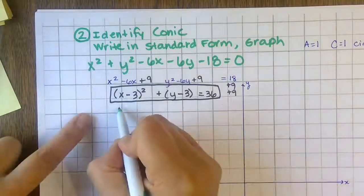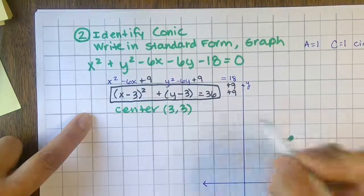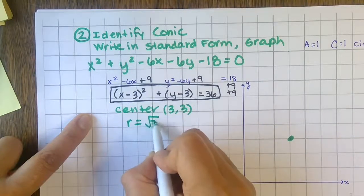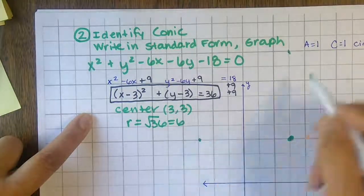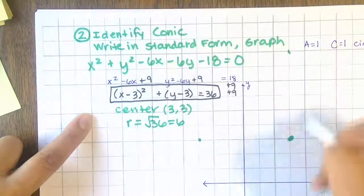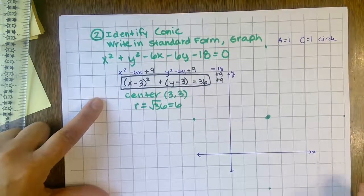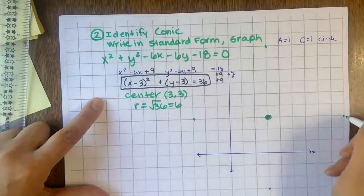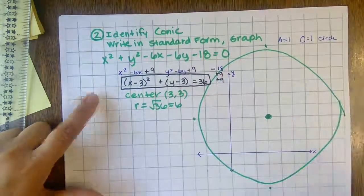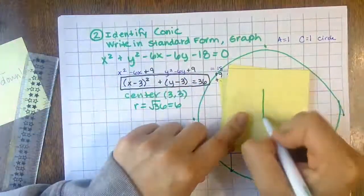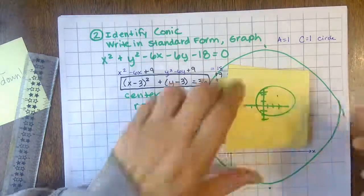Combining everything gives x minus three squared plus y minus three squared equals 36. This is now standard form for a circle. The center is at positive three, positive three. The radius is the square root of 36, which is six units — go six units north, south, east, and west from the center to graph the circle.